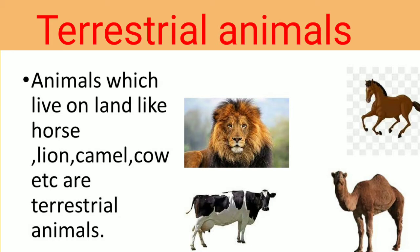Number 1: Terrestrial animals. Animals which live on land, like horse, lion, camel, cow, etc., are known as terrestrial animals. These animals walk and run on the land with the help of their legs. Yaani, wo animals jo zameen pe rehte hain, aur zameen pe daurte hain apne pairon ka use karke, unhe hum terrestrial animals kehte hain.